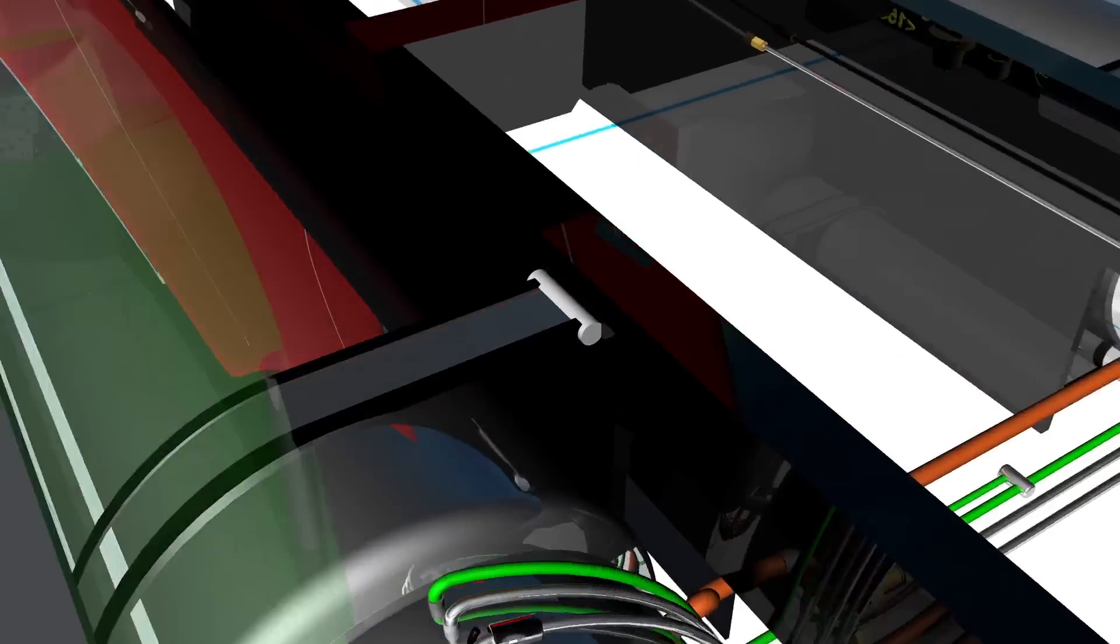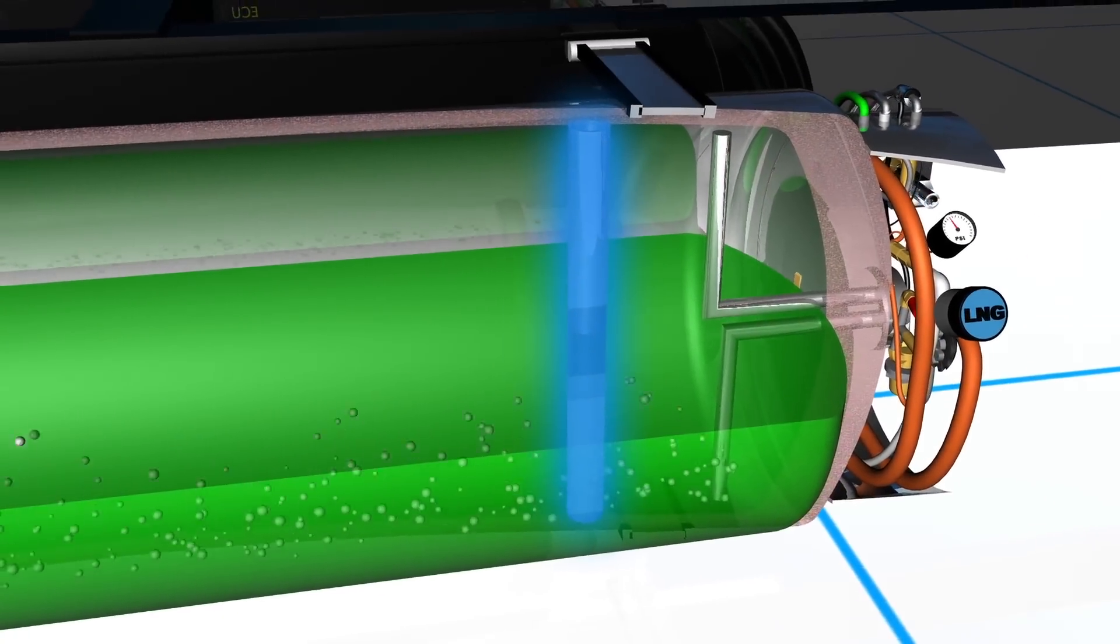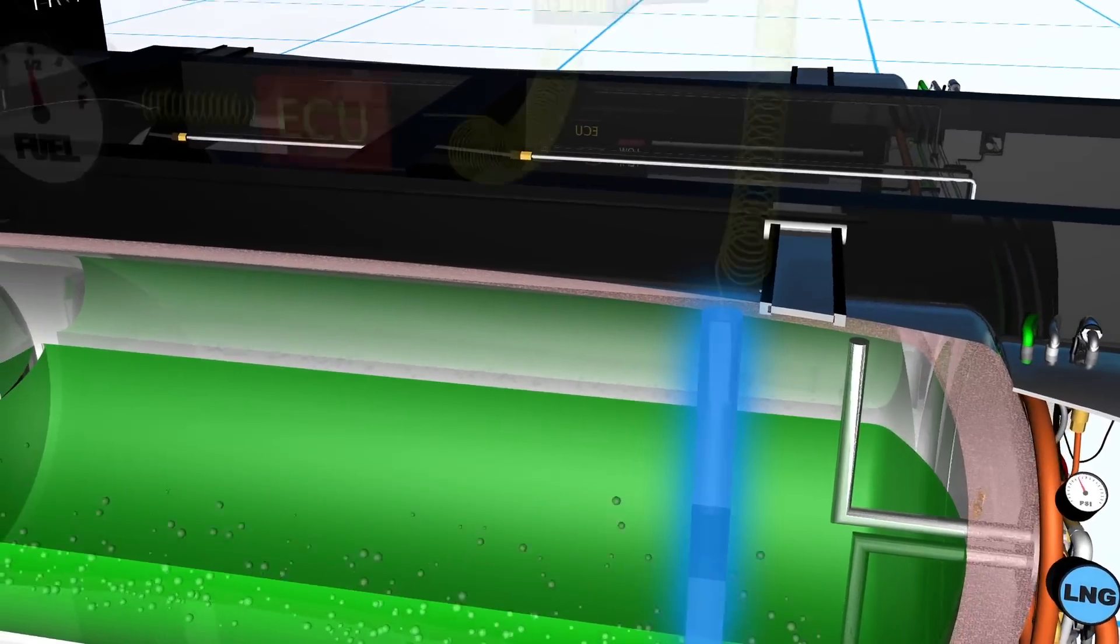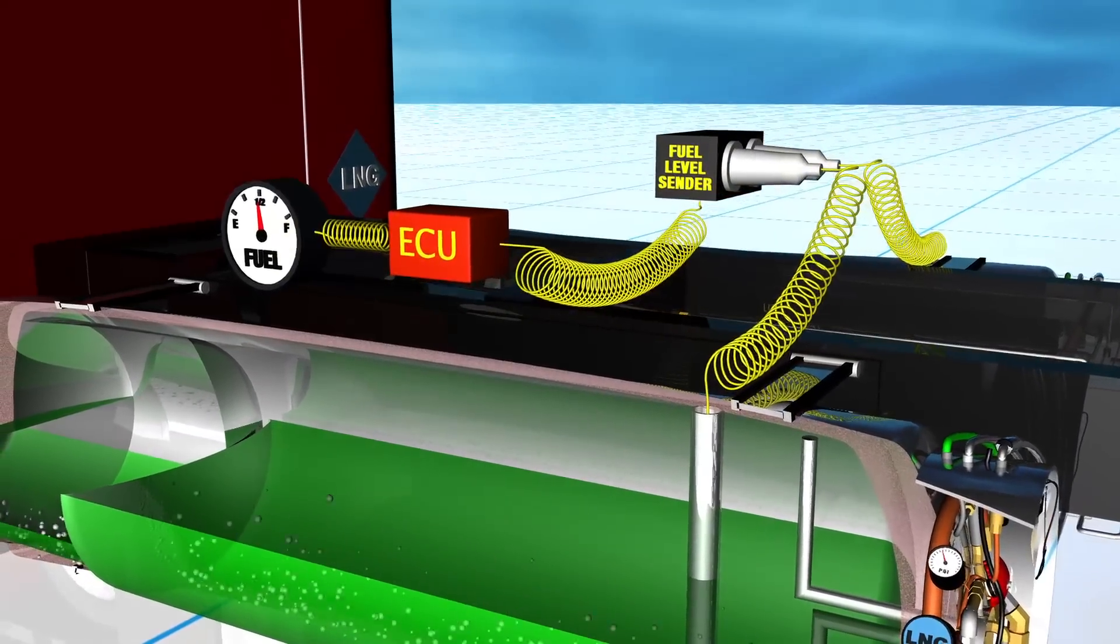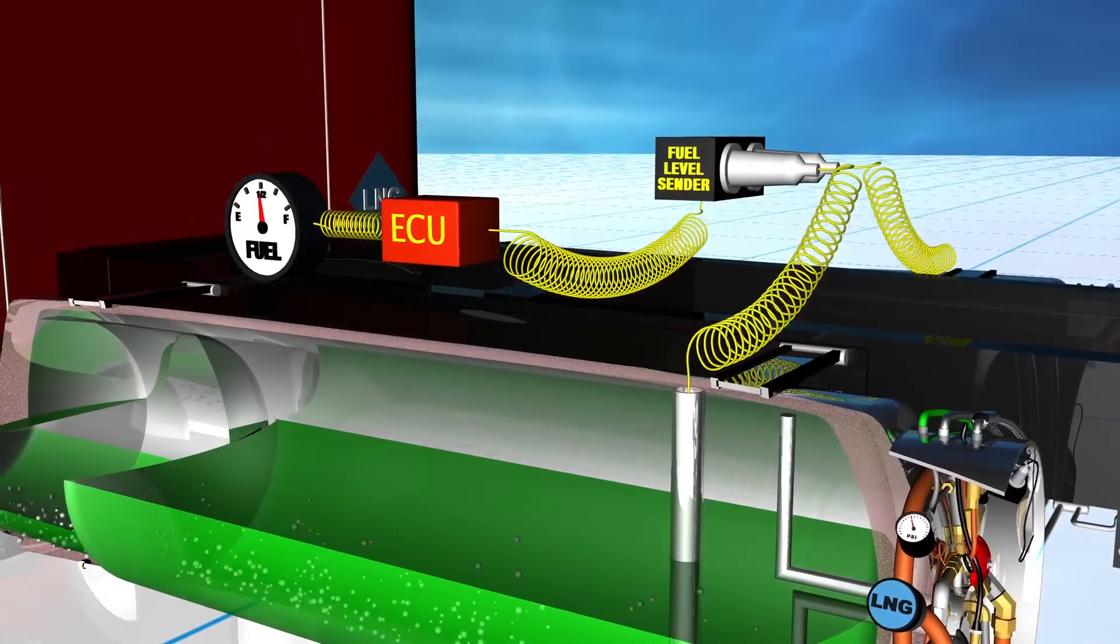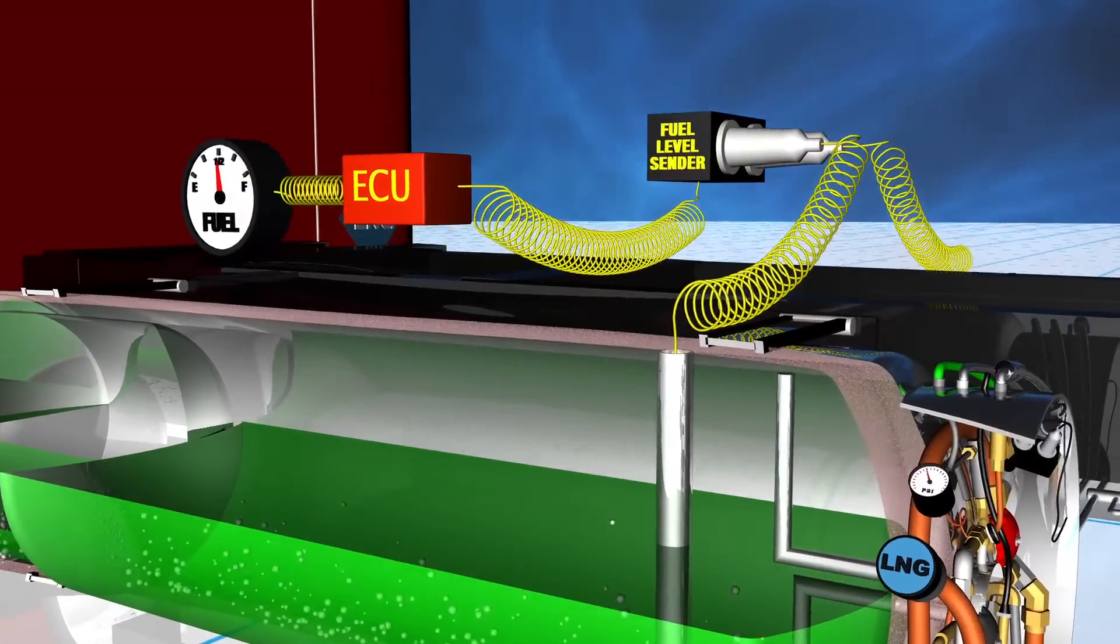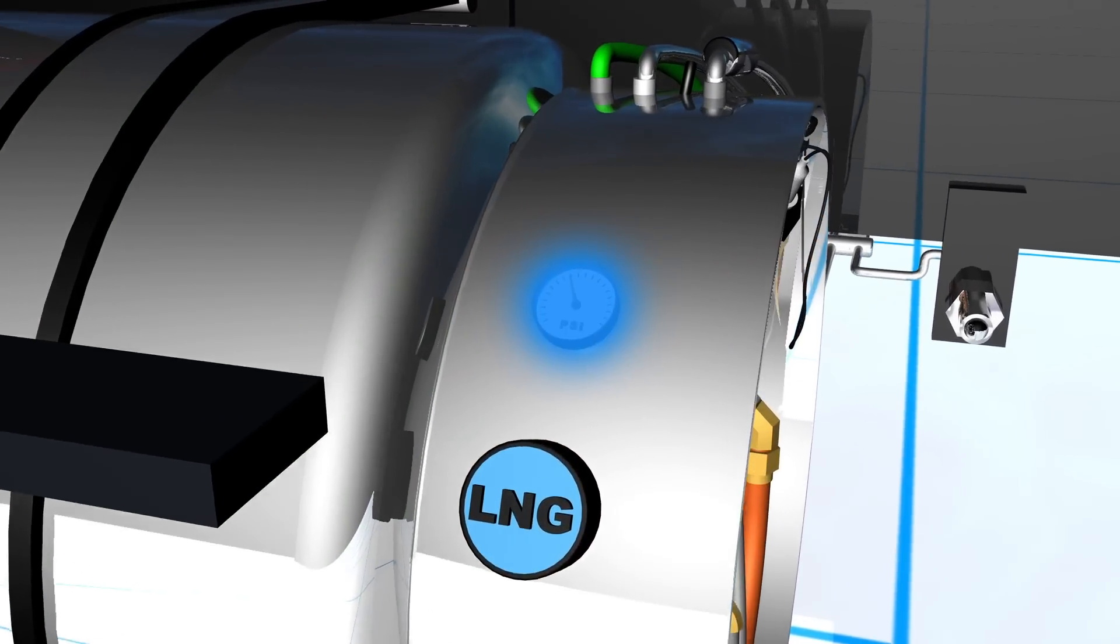A capacitance liquid level sensor is located inside the tank as you see here. It sends a signal to an electronic control unit which in turn drives the vehicle's OEM fuel level gauge. Each tank has its own mechanical gauge to indicate the pressure inside.